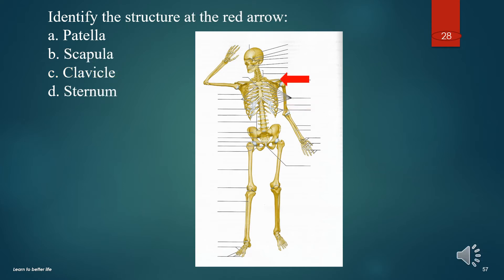Identify the structure at the red arrow. A. Patella. B. Scapula. C. Clavicle. D. Sternum. The answer is C. Clavicle.